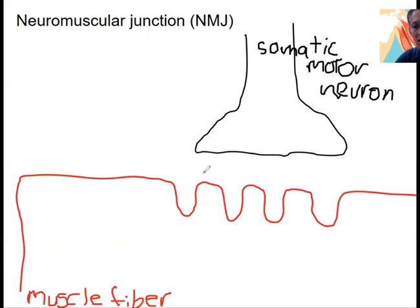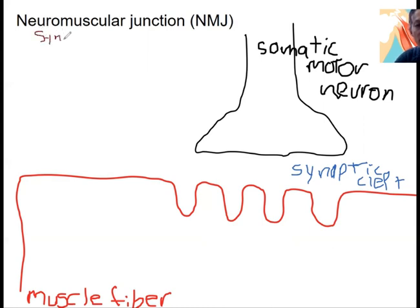What is the space here? The synaptic cleft — that space that makes up the synapse. A neuromuscular junction is a type of synapse. Neurons can also synapse with other neurons, glands, or other structures. This is one specific type of synapse we're going to talk about.